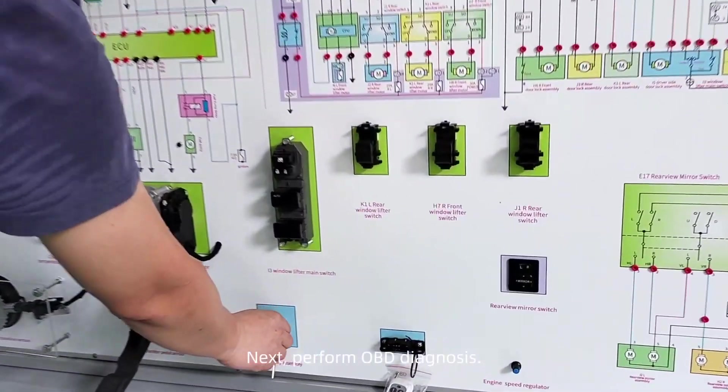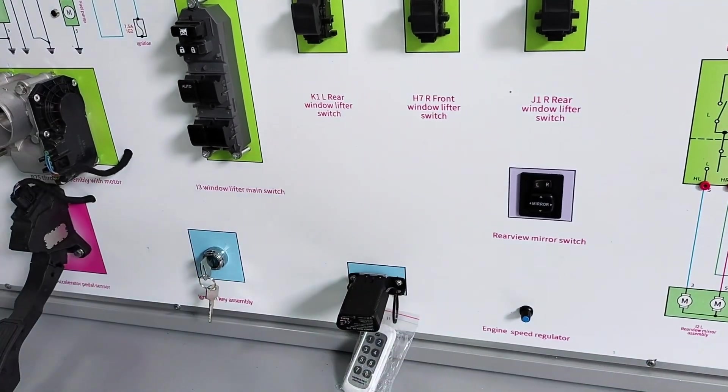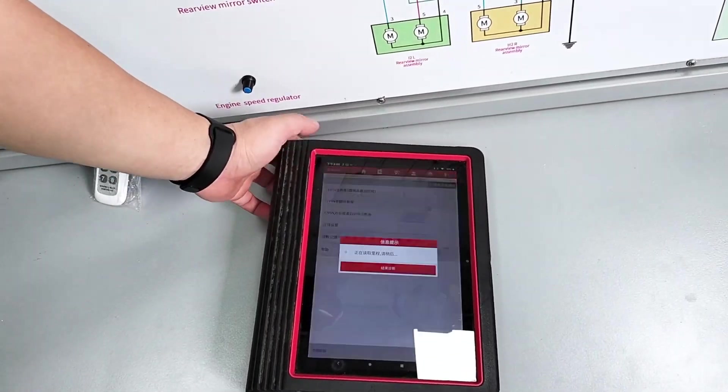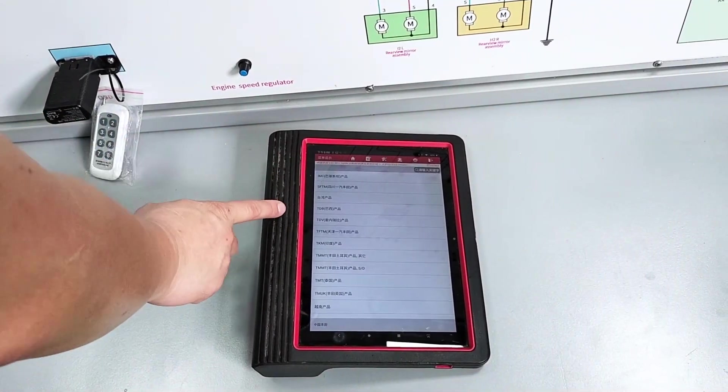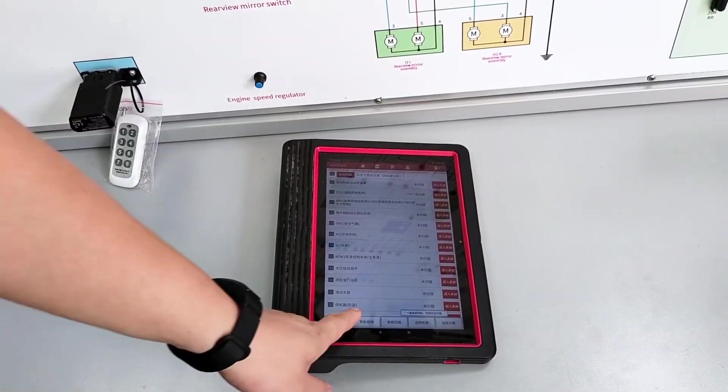Next, perform OBD diagnosis. Turn on the ignition switch. Connect the OBD diagnostic plug. Select the corresponding brand. Select the corresponding model. Click scan.